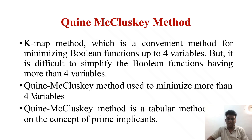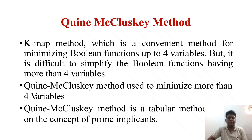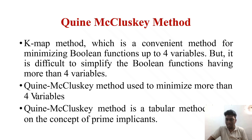Welcome to this video on the tabulation method, also known as the Quine-McCluskey method. Previously we discussed the Karnaugh map method, which helps in minimizing Boolean expressions, but whenever the number of variables is more than four it becomes very difficult to solve with the K-map method. So as an alternative, we use the Quine-McCluskey method.